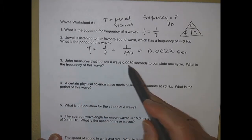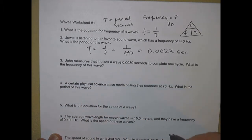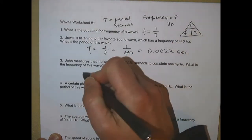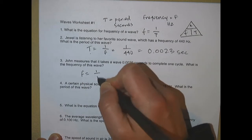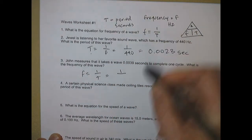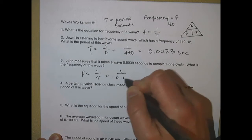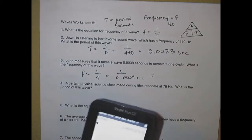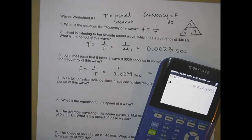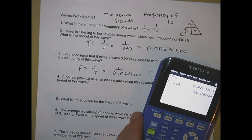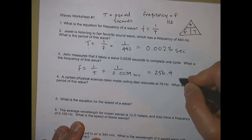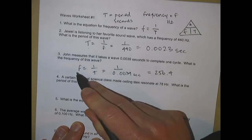John measures that it takes a wave 0.0039 seconds to complete one cycle. What is the frequency of this wave? Frequency equals one over the period. Plug in the numbers: one divided by 0.0039 seconds. On your calculator, one divided by 0.0039 equals 256.4, and that is measured in Hertz (Hz).